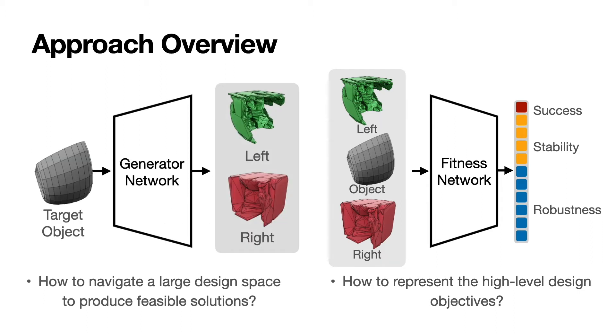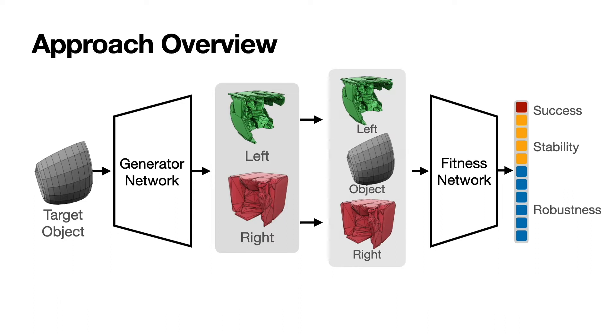To efficiently navigate the large design space, we use a 3D generator network that produces 3D finger geometries based on the target grasp object. The parameters of the generator network can be directly optimized to maximize the fitness network score prediction.